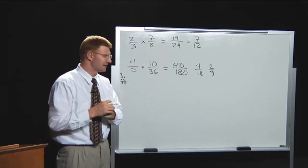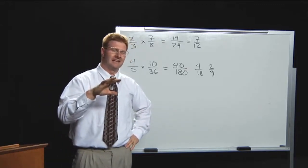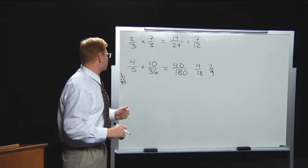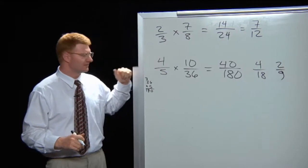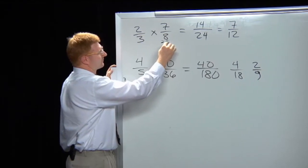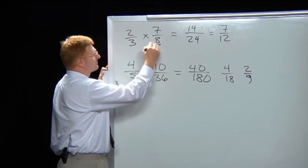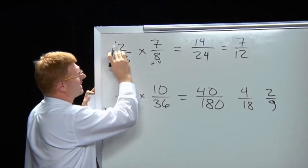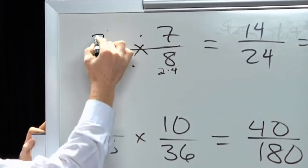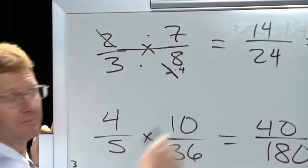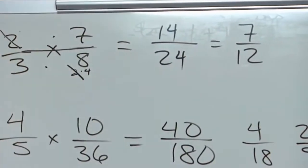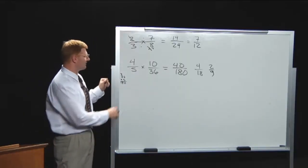Now, as you recall, I introduced a secret little way of simplifying: we broke numbers apart using prime factorization — splitting open the number to see what it's made of. This helps us a great deal. Notice that eight is two times four. If we write it that way, the twos can cancel before we actually multiply. Then all we have is one times seven on top, which is seven, and three times four on the bottom, which is twelve.